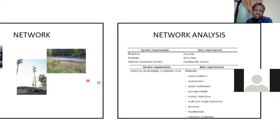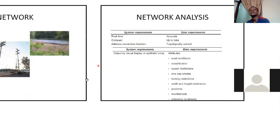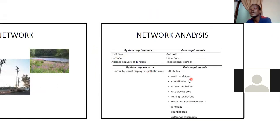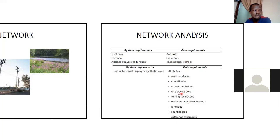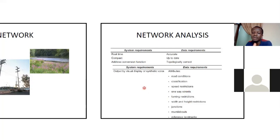For network analysis it's very important to have attributes — we have to collect data. Everything revolves around data. Data has to be accurate, up to date, and topologically correct in terms of vector data. We're talking about lines connecting to lines; if your lines don't connect properly, you have problems.